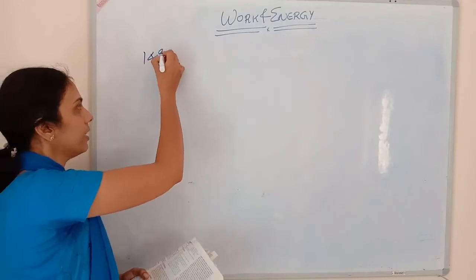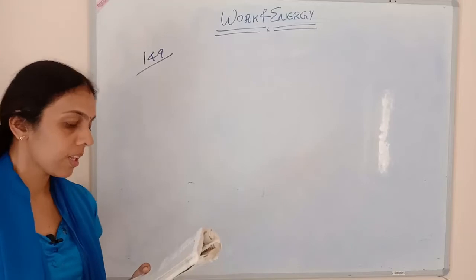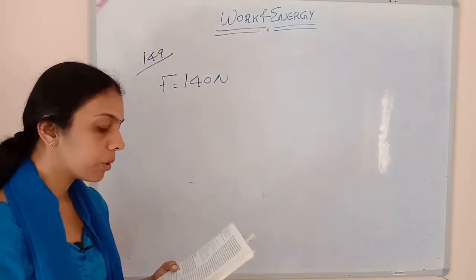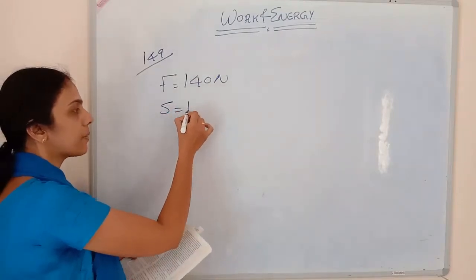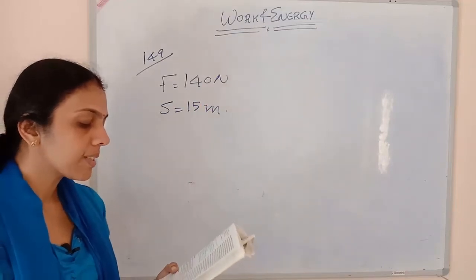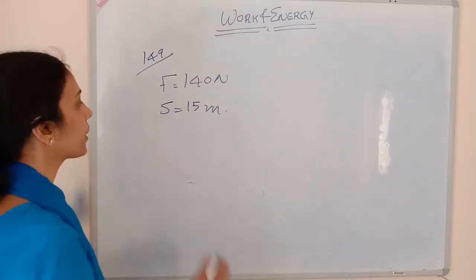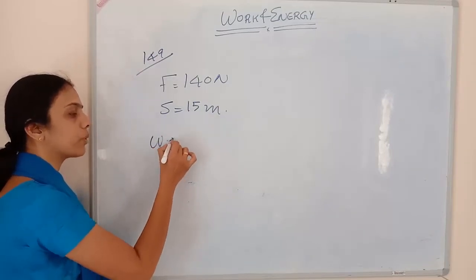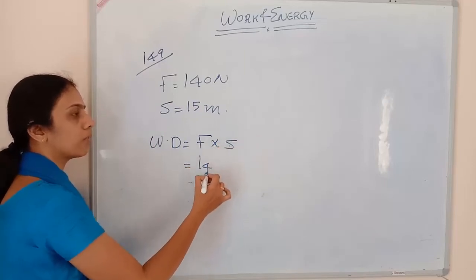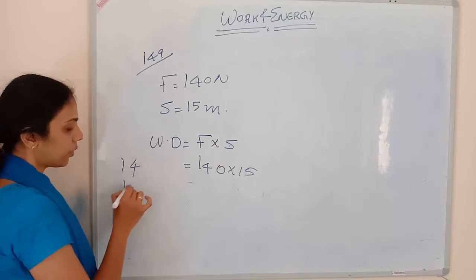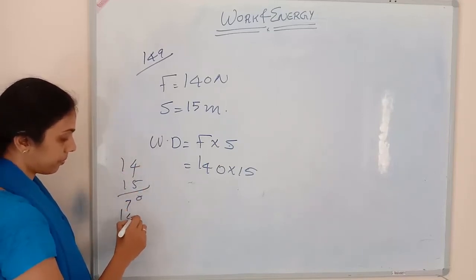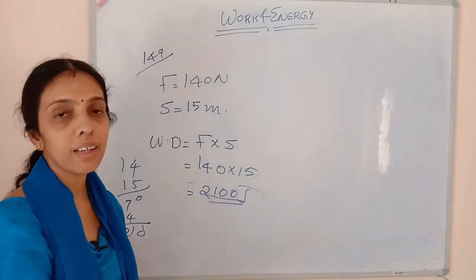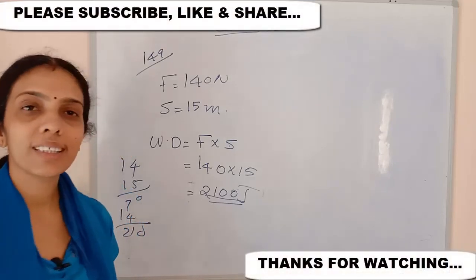Next numerical, page 149: a pair of bullocks exerts a force of 140 Newton on a plow. The field being plowed is 15 meter long. How much work is done in plowing the length of the field? Work done equals force into displacement: 140 into 15 equals 2100 Joule or Newton meter.